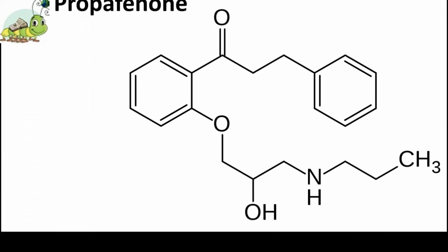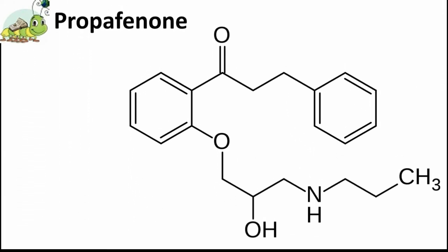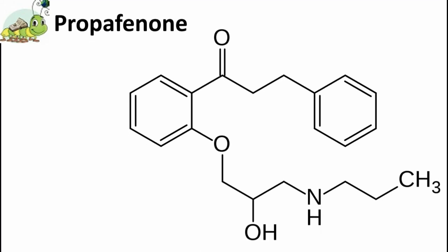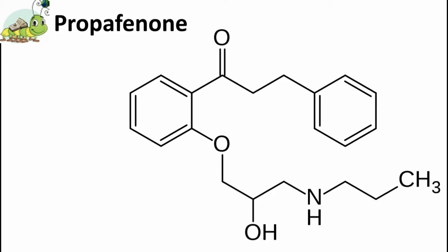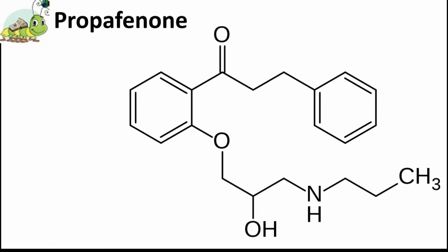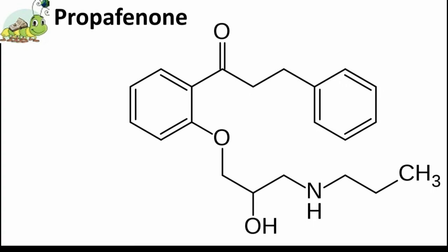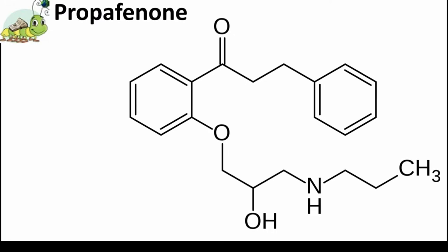Tenth drug: Propafenone. Propafenone exhibits predominantly class 1c properties with conduction slowing due to sodium channel blockade. Additionally, propafenone is a weak beta receptor and L-type calcium channel blocker. Propafenone is the last type of drug in class 1.